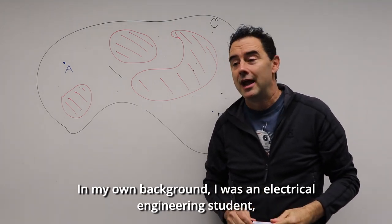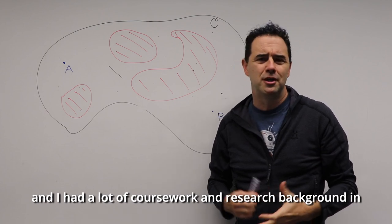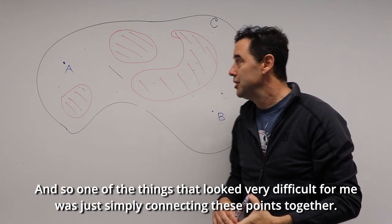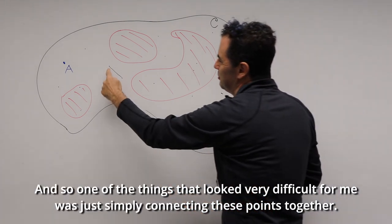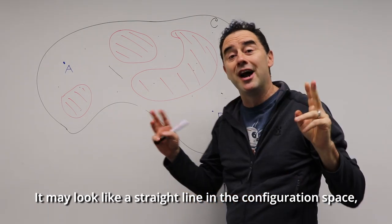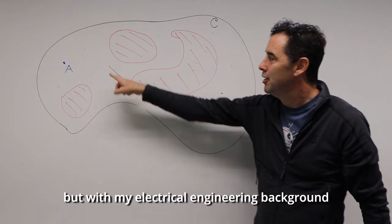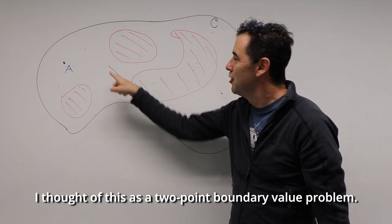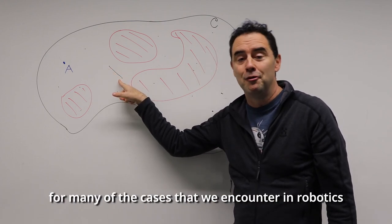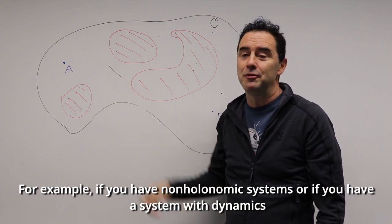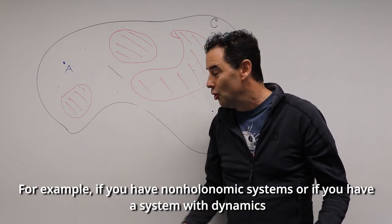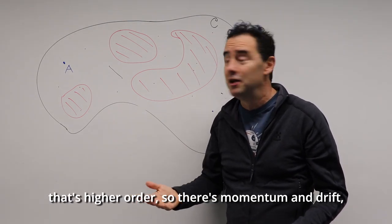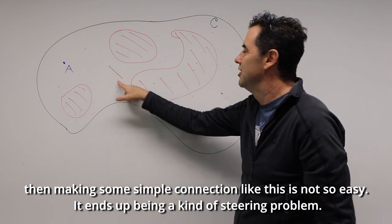In my own background, I was an electrical engineering student with coursework and research in control and dynamical systems. One thing that looked very difficult was simply connecting points together. What may look like a straight line in configuration space, with my background in differential equations, I thought of as a two-point boundary value problem — especially for non-holonomic systems or systems with higher-order dynamics where there's momentum and drift.